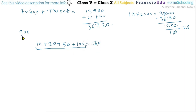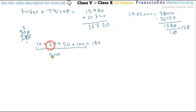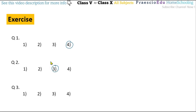He has to give a total of 900 rupees, so 900 divided by 180 equals 5. This means he is giving 5 of each denomination — 5 notes of rupees 10, 5 notes of rupees 20, 5 notes of rupees 50, and 5 notes of rupees 100. The number of rupees 20 notes is also 5, so option number three is correct.